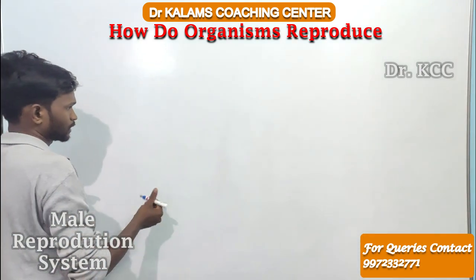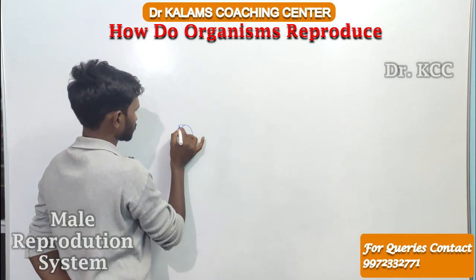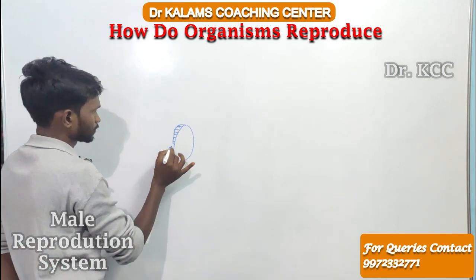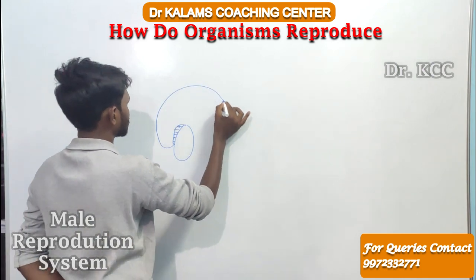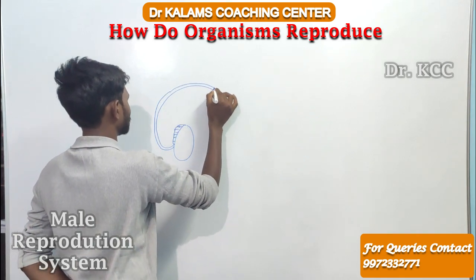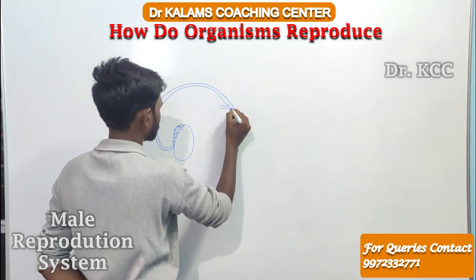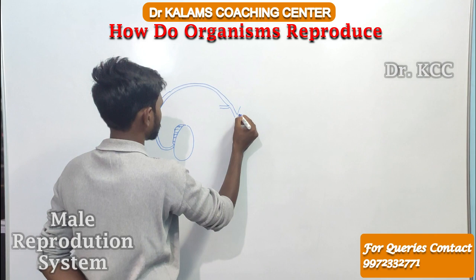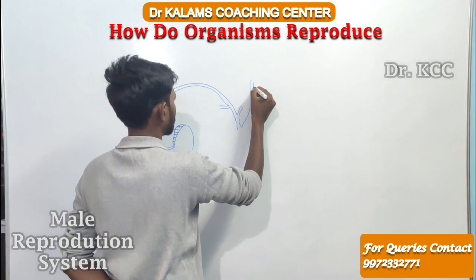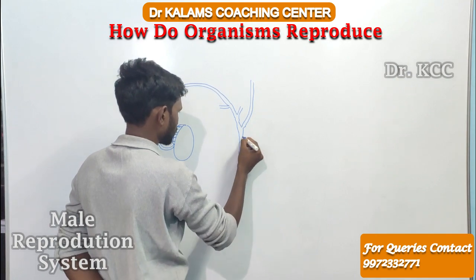First, mark your testes — this is your testes. Around the testes, with a brush-like shape, that becomes your epididymis. From the epididymis, the sperm duct goes up, and then comes the vas deferens.